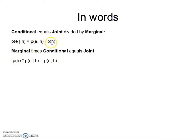If we rearrange this, if we multiply both sides by the marginal here, so imagine times probability of H times probability of H, boom, we get this. So the marginal times the conditional gets us back to the joint.